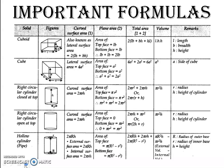As you know, there are several important formulas in this chapter. You need to learn by heart all the equations used in this chapter. This is a brief summary of the important formulas. You can see cuboid, cube, and cylinder. You have to learn curved surface area, total area, and volume.